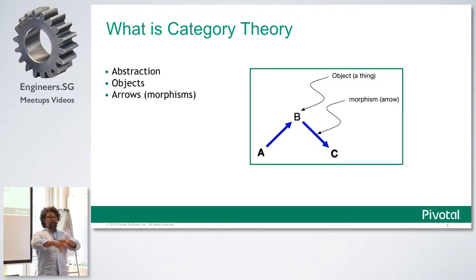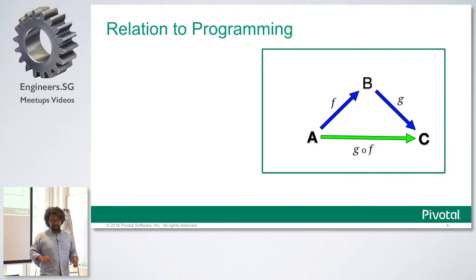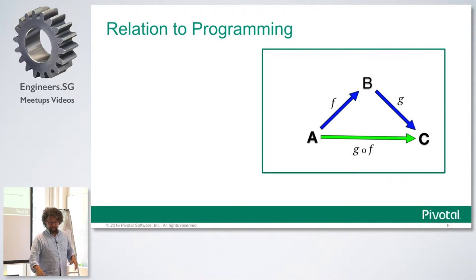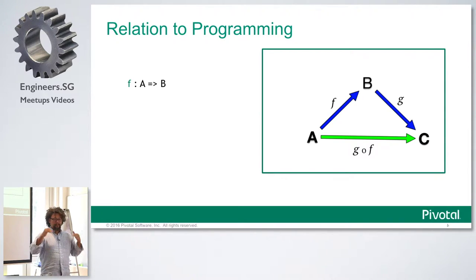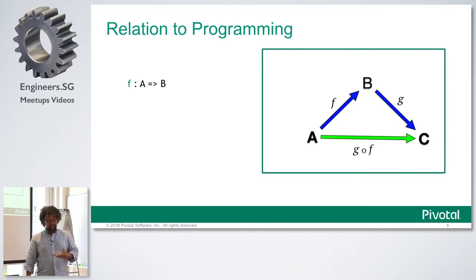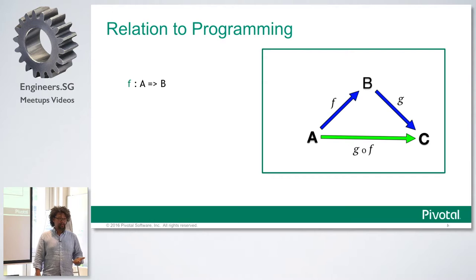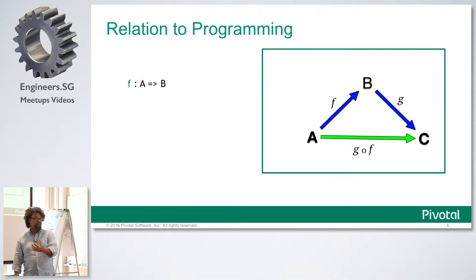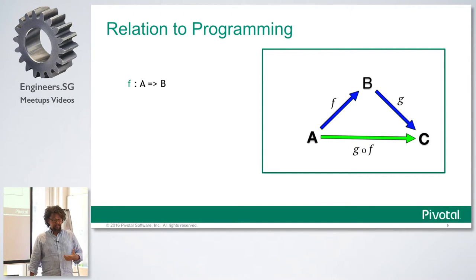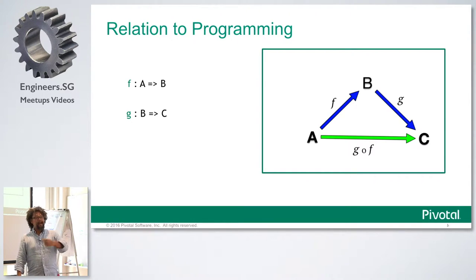I'm going to jump into how this stuff relates to programming, because that's really what we want to know. For our purposes, A and B are types. F is a function with an input A and an output B — so F takes a parameter A and returns something of type B.